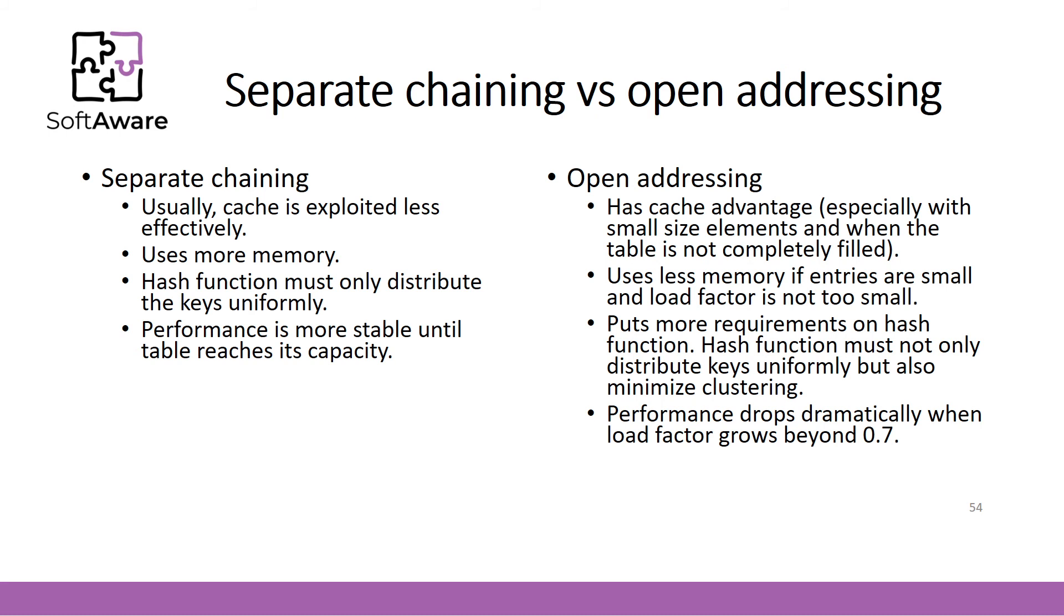The main properties of open addressing are the following. It has cache advantage, especially with small size elements and when the table is not completely filled. It uses less memory if entries are small and load factor is not too small. It puts more requirements on hash function. Hash function must not only distribute keys uniformly, but also must minimize clustering. Performance in this kind of hash table drops dramatically when load factor grows beyond 0.7.